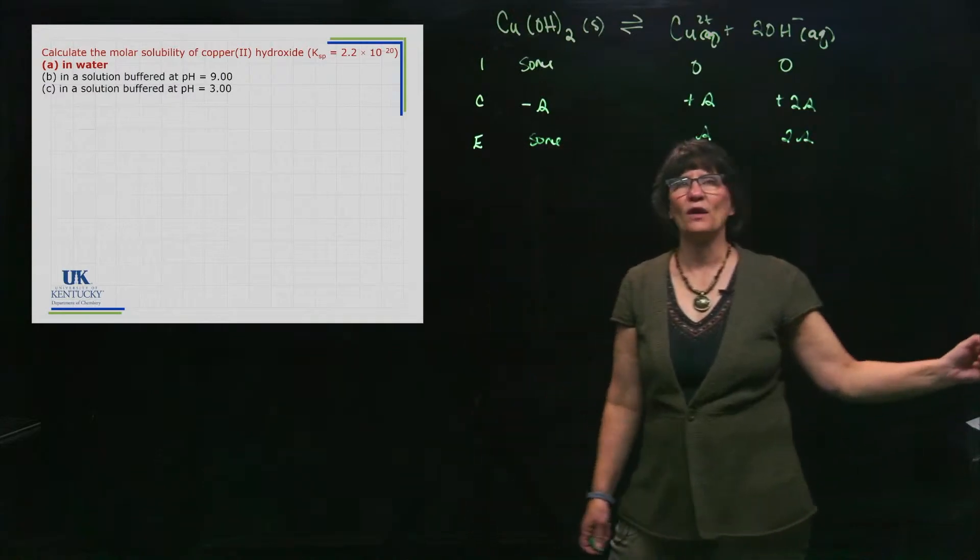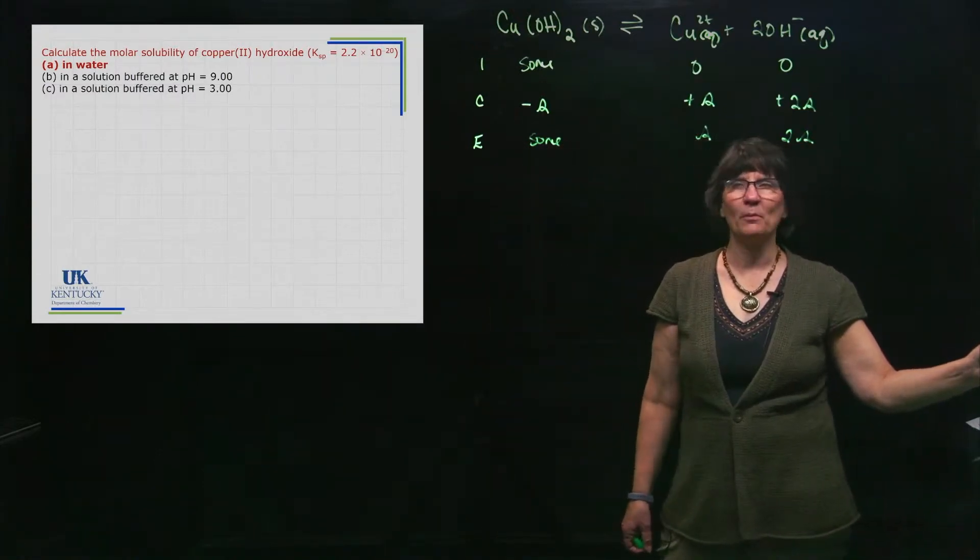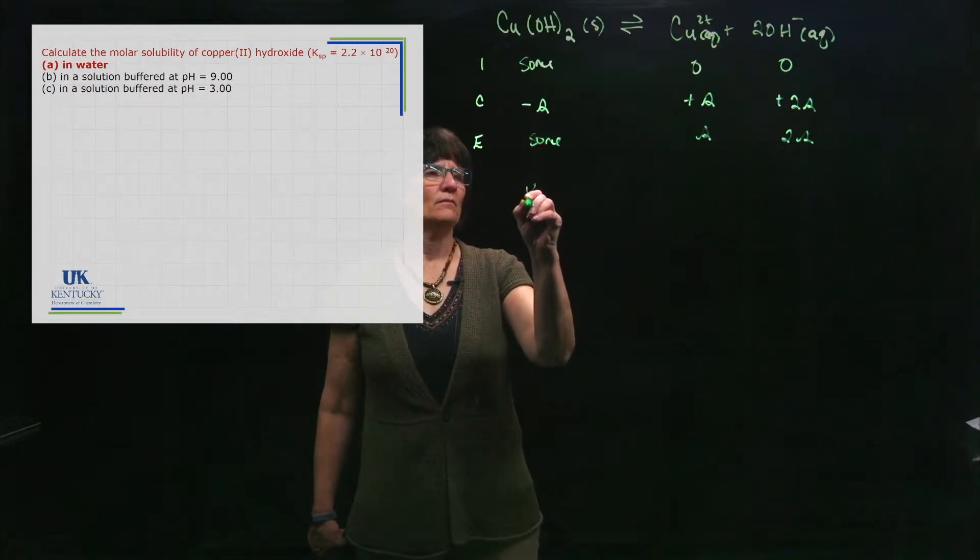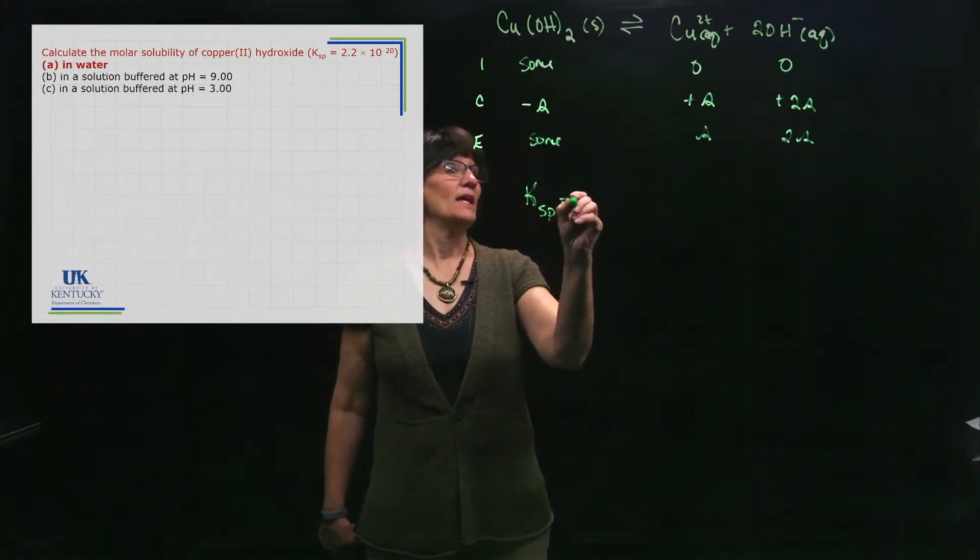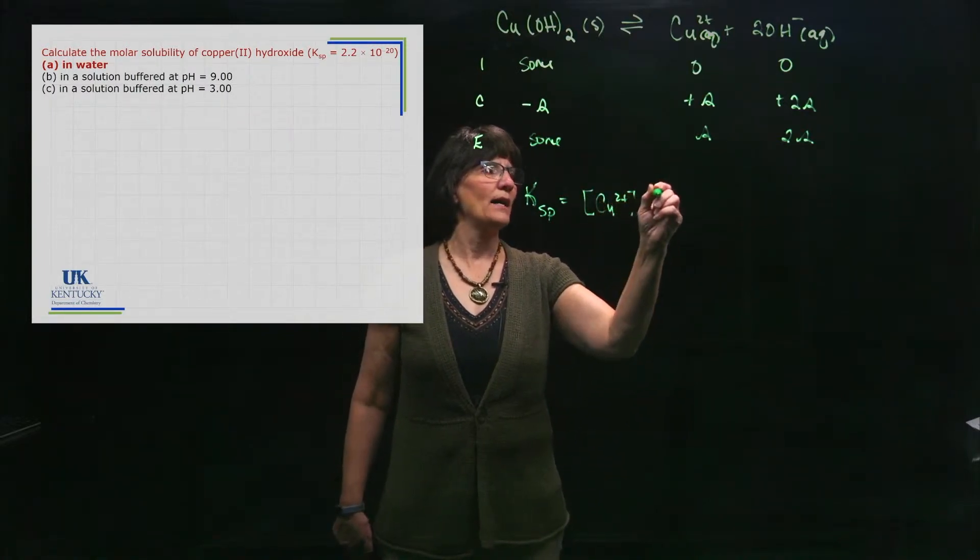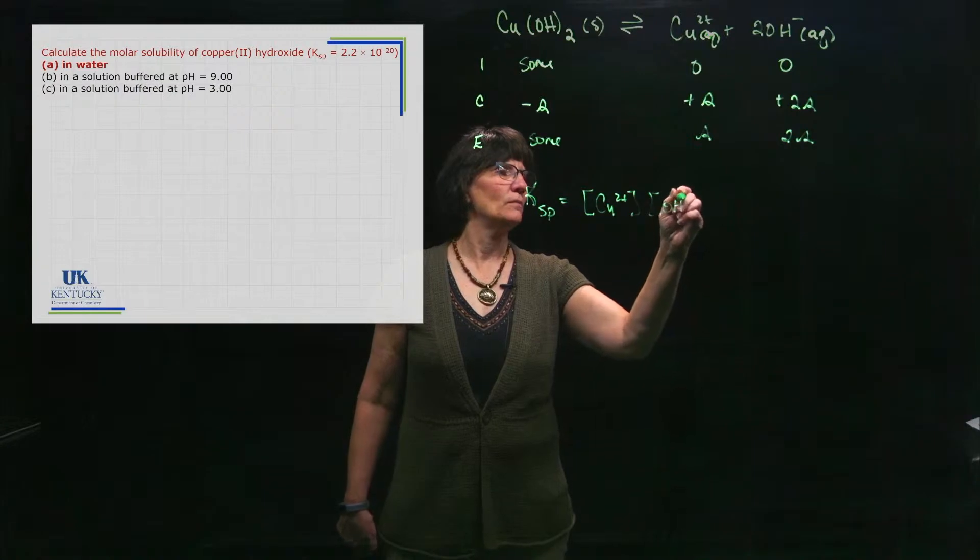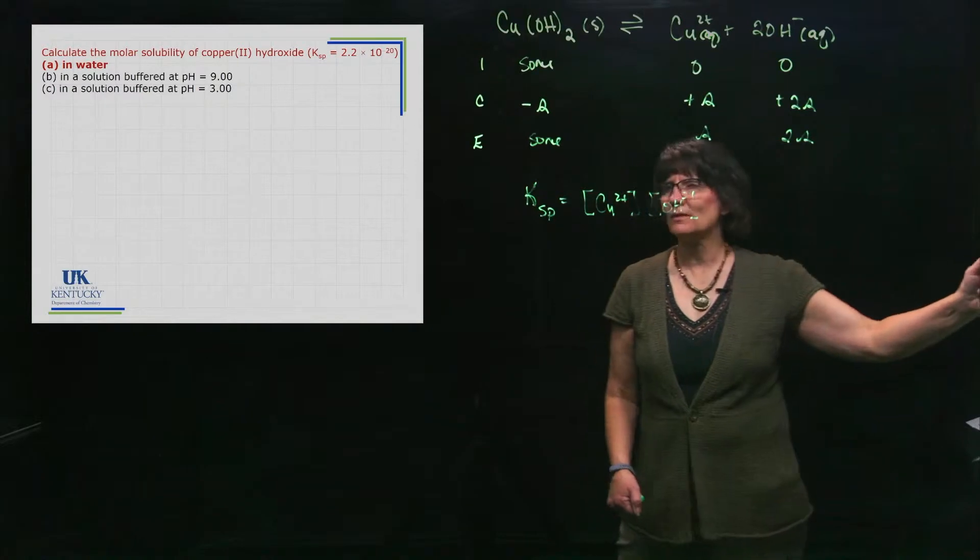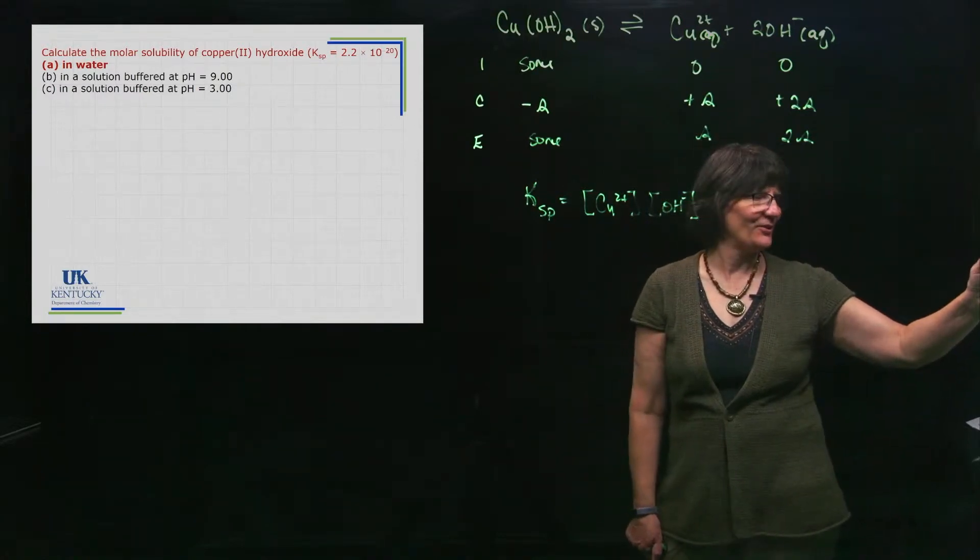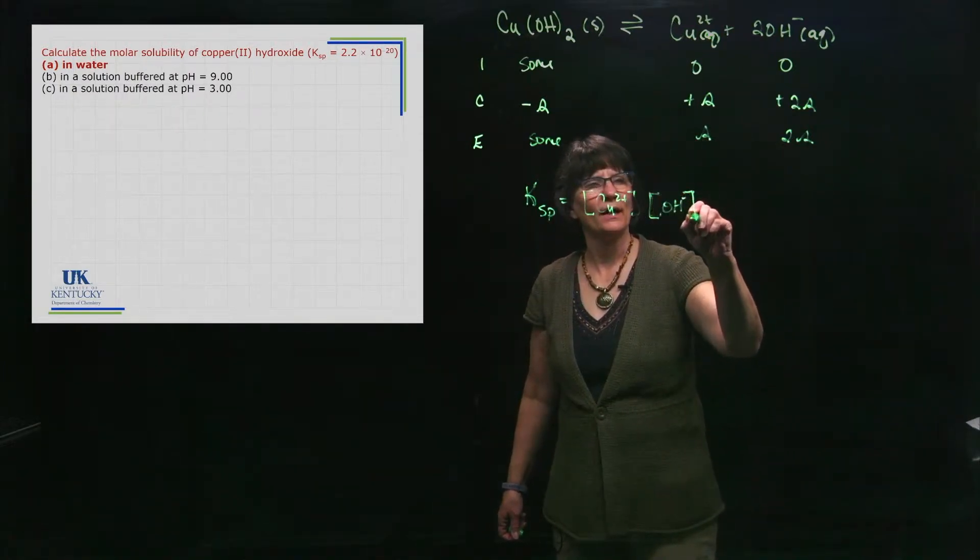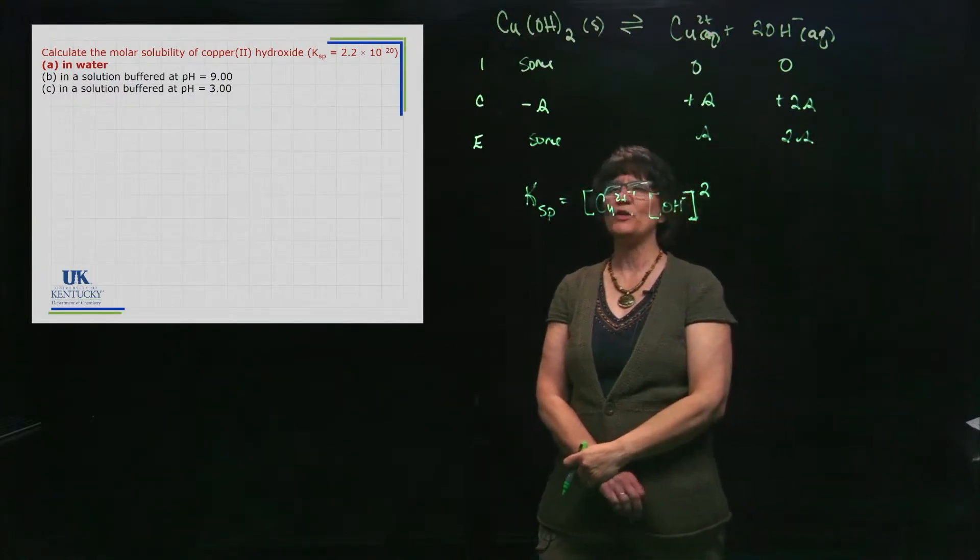Alright, so far that is a straightforward KSP problem where you're trying to determine the molar solubility. Then you write your expression: KSP is equal to the copper concentration times the hydroxide concentration. My pen is not writing as well as I should like. Alright, so you can't see my brackets too well, and that's squared.